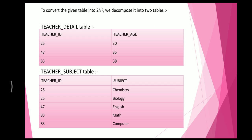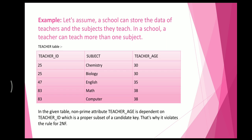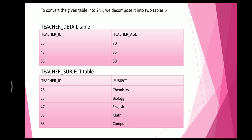So we decompose the table. The first table is the Teacher Detail table: Teacher ID 25 has age 30, ID 47 has age 35, and ID 83 has age 38. The second is the Teacher Subject table: Teacher ID 25 teaches Chemistry and Biology (written twice), Teacher ID 47 teaches English, and Teacher ID 83 teaches Maths and Computer. This is the decomposition for 2NF.